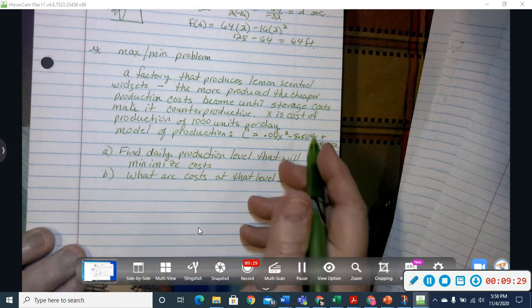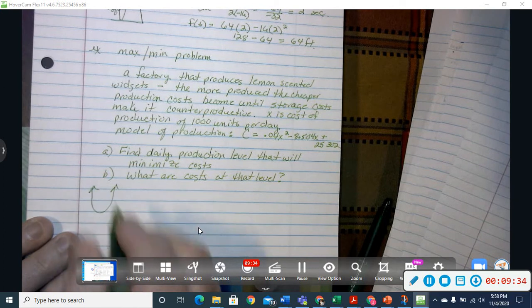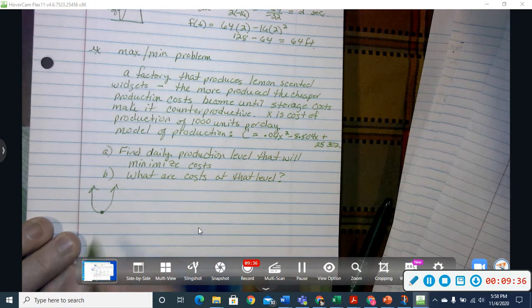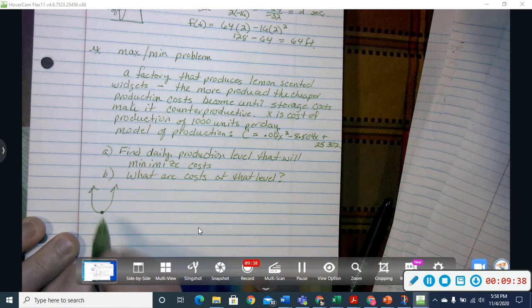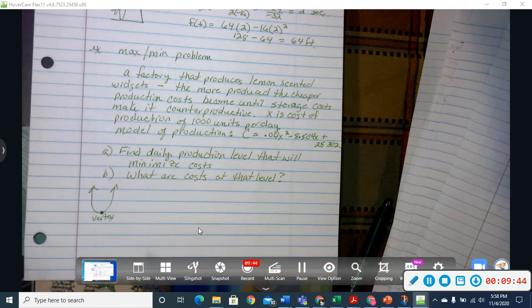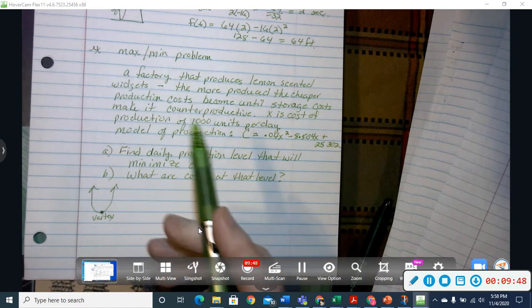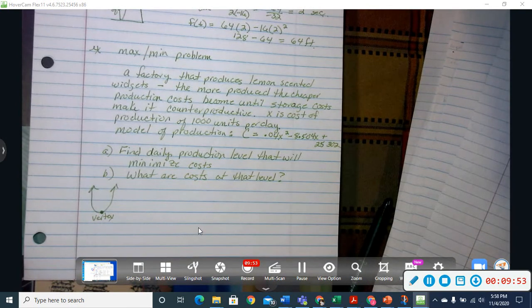Now, if we graph this particular problem, it would be looking something like this, and so if we're trying to find the minimize point, we're still trying to find the vertex, but it is a minimum point since it's opening up, whereas on our projectile problem, that was a maximum point since it was opening down.